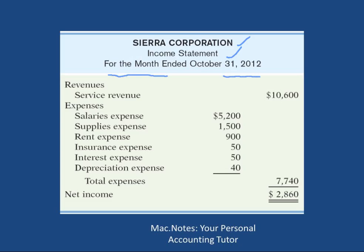The income statement is a time period statement, so it tells you it is for the month ended October 31st, 2012. It summarizes revenues and expenses. As of October 31st, 2012, service revenue is ten thousand six hundred — that is the amount of revenue earned by this business from October 1st to October 31st. These are also the expenses incurred by the business from October 1st to October 31st.